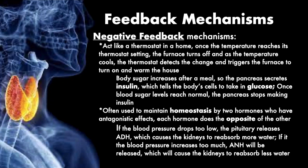There are two types of feedback mechanisms: negative feedback and positive feedback. Negative feedback is like that thermostat in the house. If I set my thermostat to 70 degrees, if it goes below that, the heat turns on; if it goes above, the air conditioning turns on. A good example of this is body sugar — blood sugar increases after a meal, the pancreas secretes insulin, which tells the body cells to take in the glucose. Once the blood sugar level reaches normal, the pancreas stops making insulin.